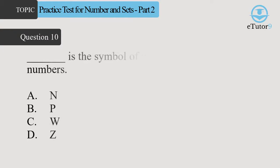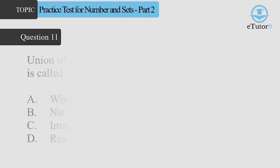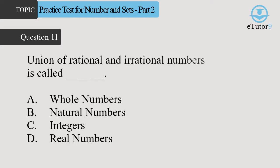Question 10. Blank is the symbol of whole numbers. Answer is D. Question 11. Union of rational and irrational numbers is called blank. Answer is D.